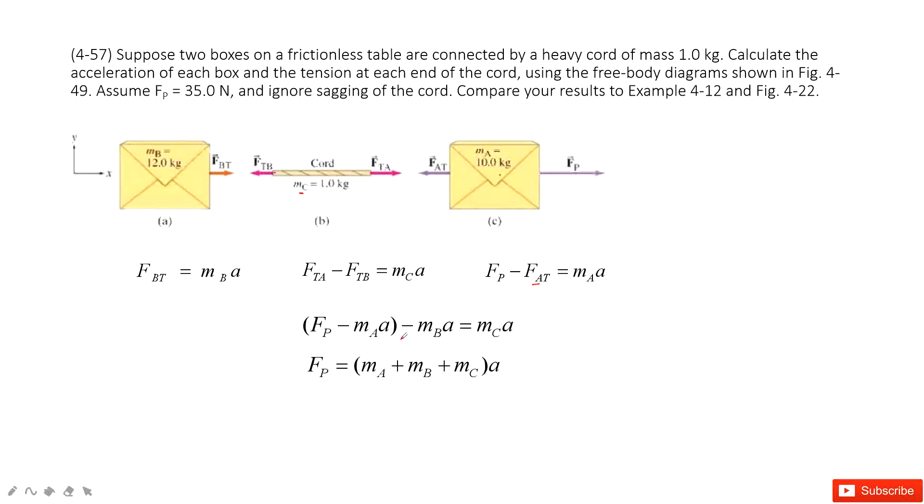In this one, very easily, you can get the acceleration and the relationship of acceleration with F_P. So now the F_P is given, F_B is given, and then the masses for M_A, M_B, M_C are given. It's super easy for you to get the acceleration.